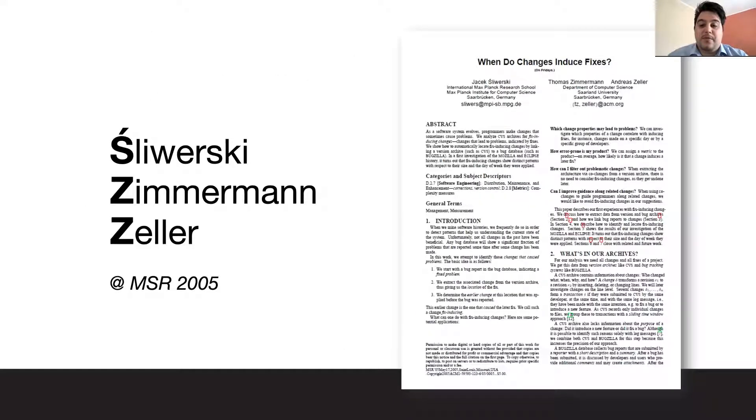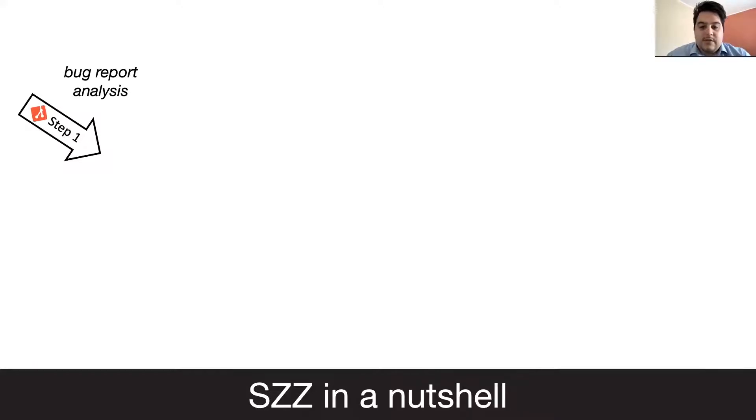Srivetsky et al. proposed the SZZ approach that allows to find what is the commit that introduces the bug. The basic assumption is that the bug is introduced by the lines impacted for the fix. But how it works? The process starts with a bug report analysis. Then, a bug-fixing commit is extracted, and using git blame, one or more buggy commits are found.